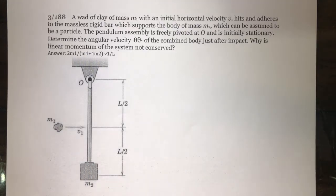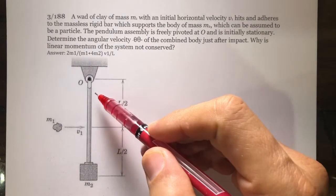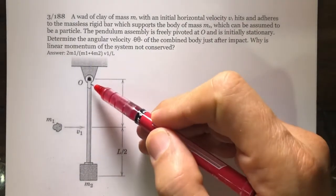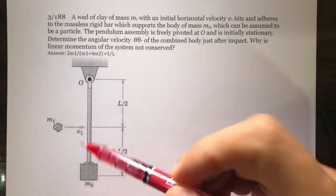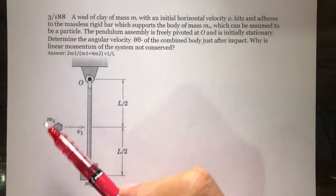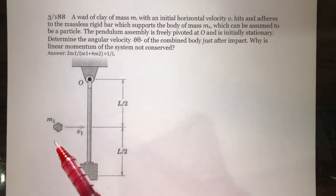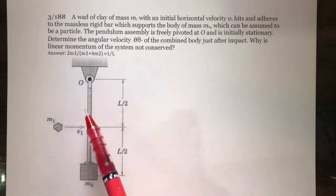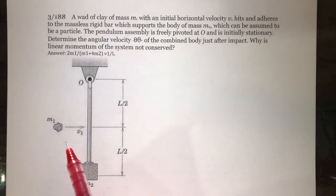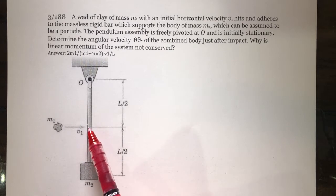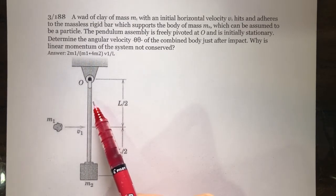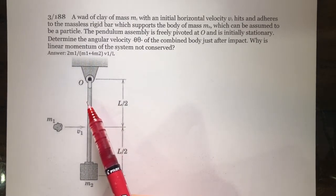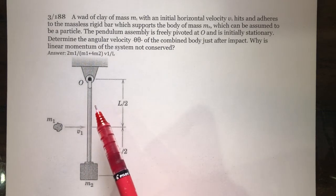Problem 188. In this problem we have a hanging pendulum which is in a stationary condition — it's not moving. We have a piece of clay which is moving with the velocity of v1 toward this bar. It's going to hit the bar and stick to it, and after this impact everything is going to start to rotate with angular velocity of omega, and we are supposed to find that angular velocity.